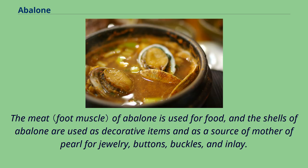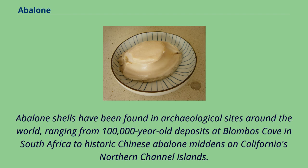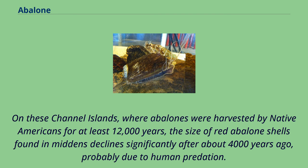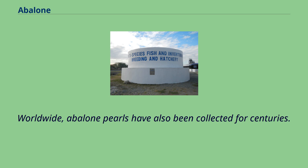The meat of abalone is used for food, and the shells are used as decorative items and as a source of mother-of-pearl for jewelry, buttons, buckles, and inlay. Abalone shells have been found in archaeological sites around the world, ranging from 100,000-year-old deposits at Blombos Cave in South Africa to historic Chinese abalone middens on California's northern Channel Islands. Where abalone were harvested by Native Americans for at least 12,000 years, the size of red abalone shells found in middens declined significantly after about 4,000 years ago, probably due to human predation. Worldwide, abalone pearls have also been collected for centuries.